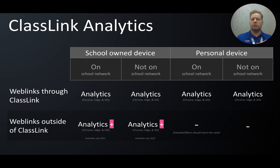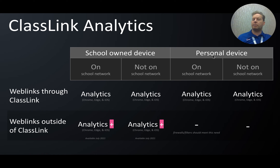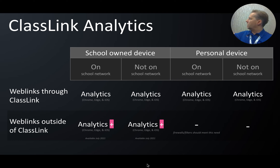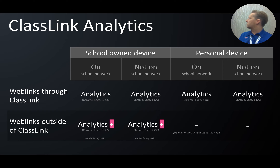ClassLink Analytics works on school-owned devices on or off the school network, but on personal devices it only works if the device is on the school network. So data isn't captured if someone is on a personal device at home on a cellular network. Analytics Plus captures clicks even outside of ClassLink — through the launchpad or elsewhere — whereas standard analytics only tracks clicks made through the launchpad itself.